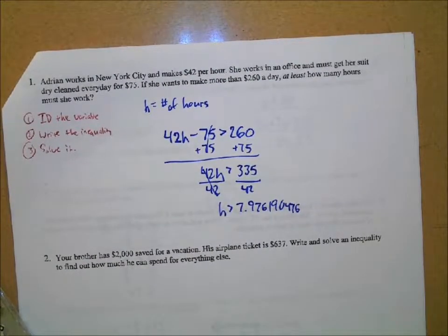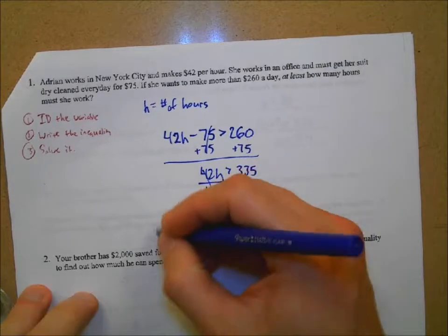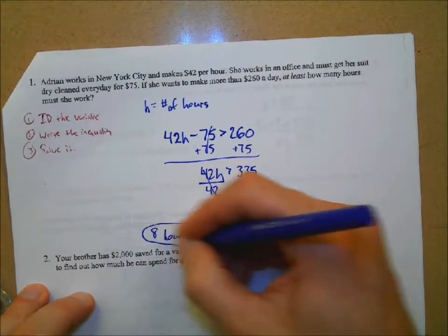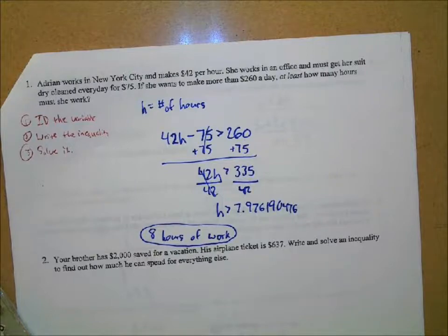When we do this division, we get something like 7.976190476. In context, exactly right. So in context here, does this kind of number make sense for an amount of hours? No, okay? Some jobs do allow you to record, like, fractions of an hour. Like, my wife's work, I think she's allowed to record, like, I want to say, like, a quarter of an hour or something like that. But most jobs, you have to make it to the whole hour here. So if she wants to make greater than 260, she's got to work how many hours? Eight. Yeah, she's got to work eight, which would be more than that 7.97. So we will just say here eight hours of work or something like that, okay, per day. And she'll make more than 260.